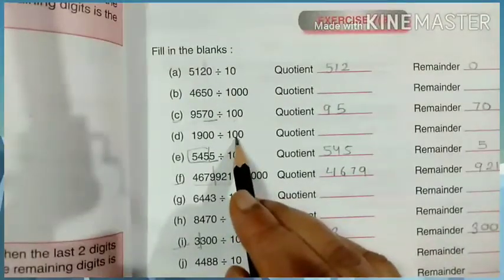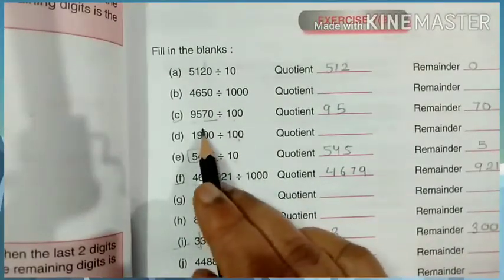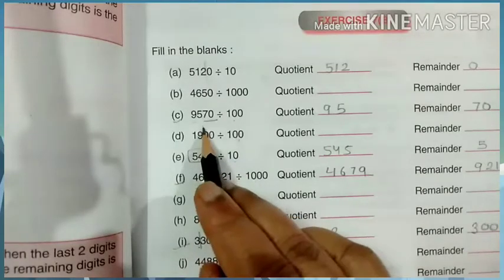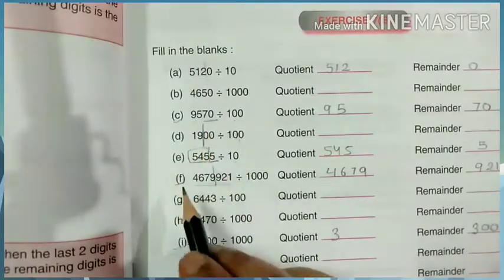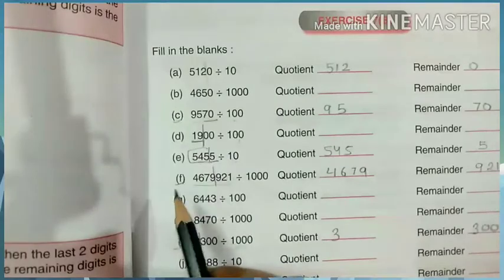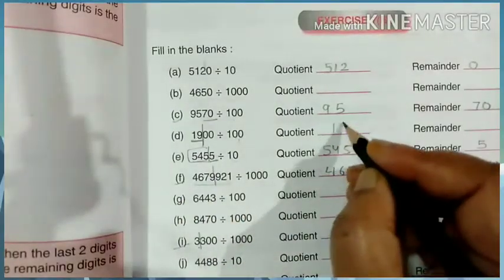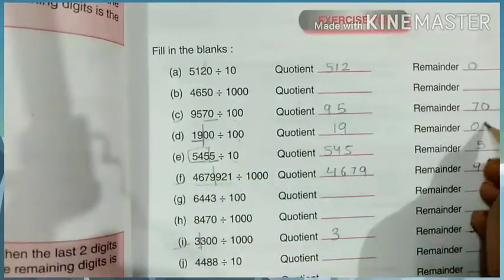How many times are there in 100? Two zeros. We will put two zeros from right side. The left side will be quotient. And the right side will be reminder.